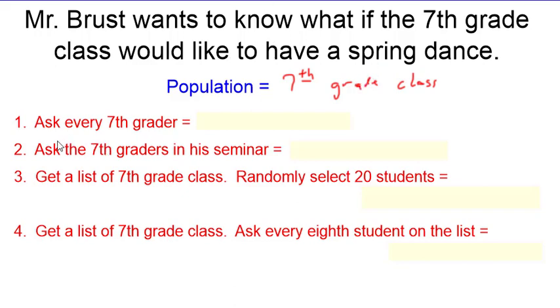So one option I would have is to ask every single 7th grader. I could walk around, find every single 7th grader and ask them, do you want to have a spring dance? If I did this, this would be a census. This would be asking every person. And then I would know pretty conclusively how 7th graders feel because I ask every single kid. Now at a small school, I could probably do this. This actually wouldn't be too hard at our school. But at bigger schools, it's too much work to go and ask every single kid.